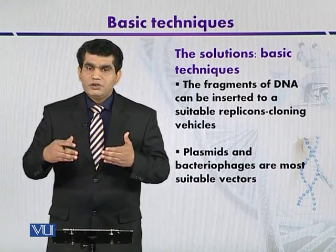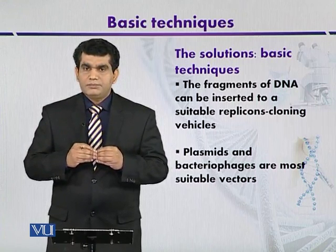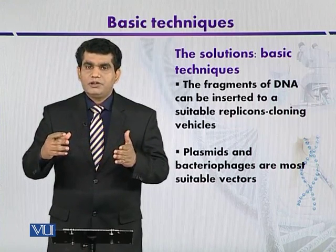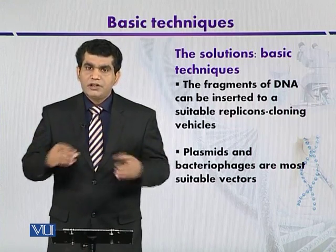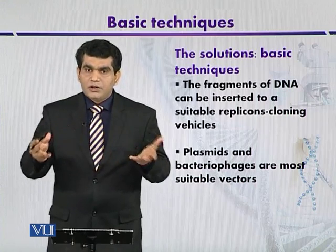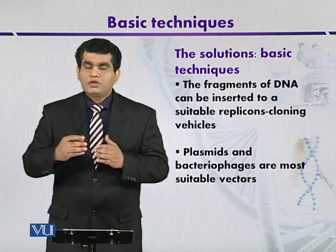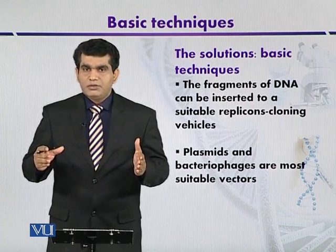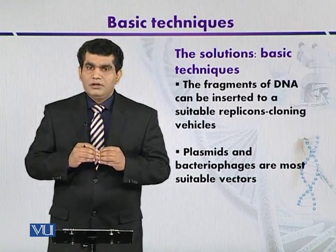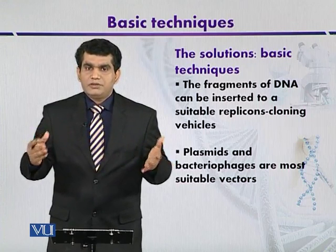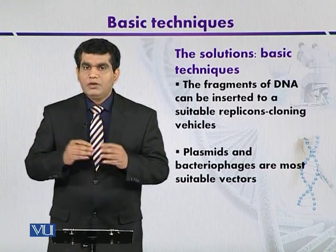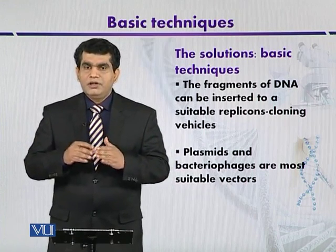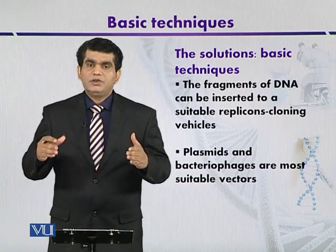If we want to insert our gene of interest into a suitable cloning vector, we have to isolate and purify the plasmid from the target organism. After that, using restriction enzymes, we cut it — a process we discussed under fragmentation. Then we insert the target DNA.